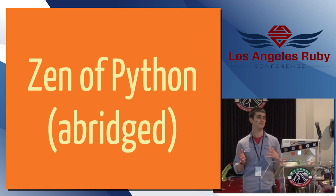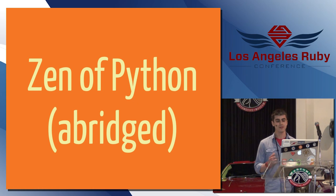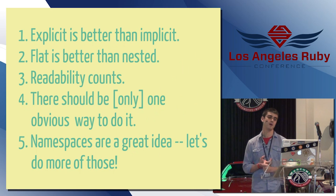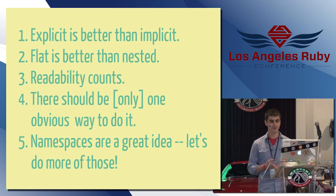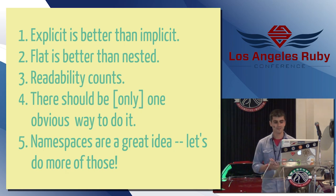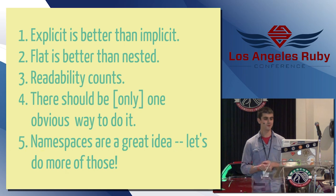Here is a few things I've extracted from the Zen of Python that I think are relevant to this presentation. One, explicit is better than implicit. Two, flat is better than nested. Three, readability counts. Four, there should be usually only one obvious way to do something. And five, namespaces are a great idea. Let's do more of those.